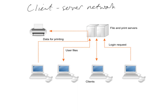We've got two different network types to look at. The first is a client-server network. In a client-server network, you've got two different types of computer: the server, which is normally a pretty powerful computer, and attached to that you've got what are called clients. Clients are the computers that you would use if you were logging on to a system. The server you probably would never use unless you were maintaining it or part of the IT department.